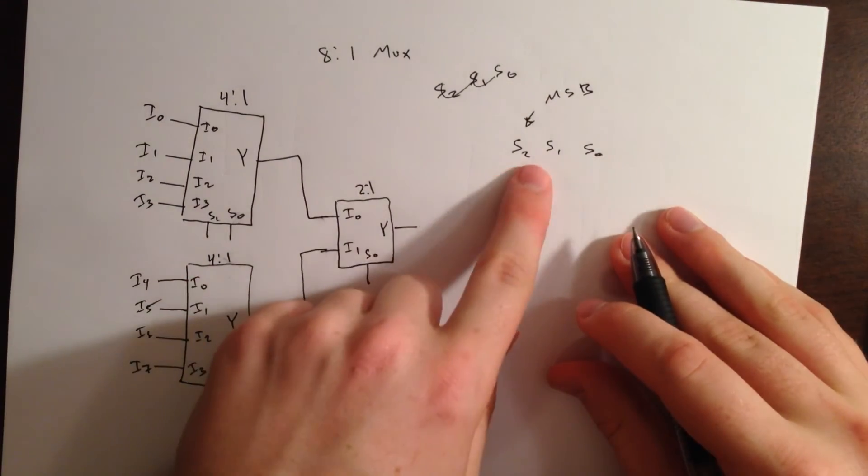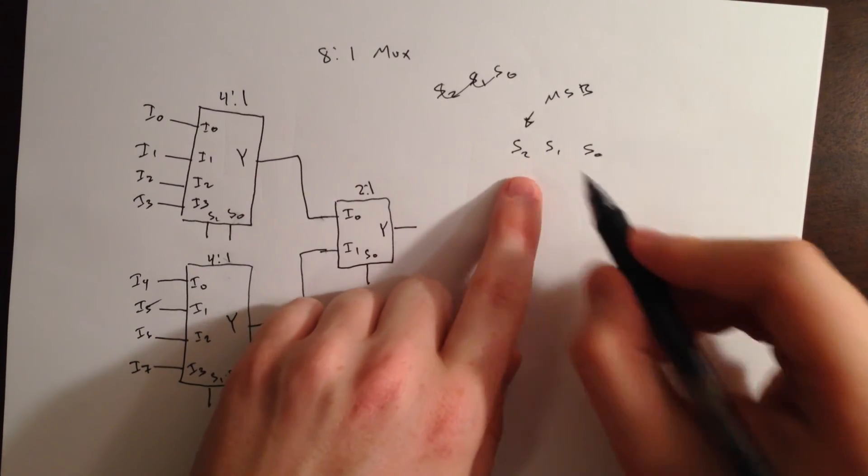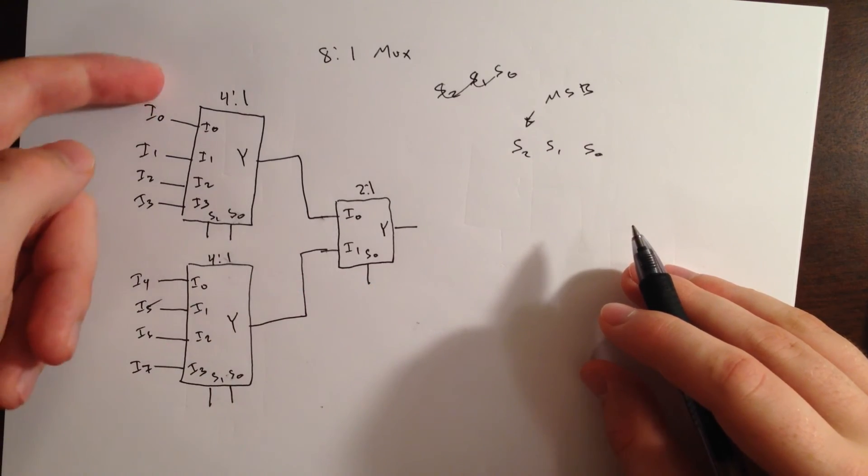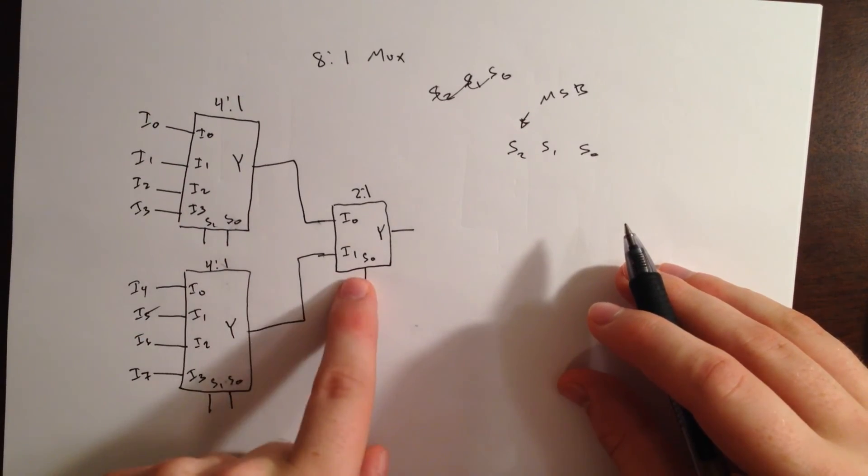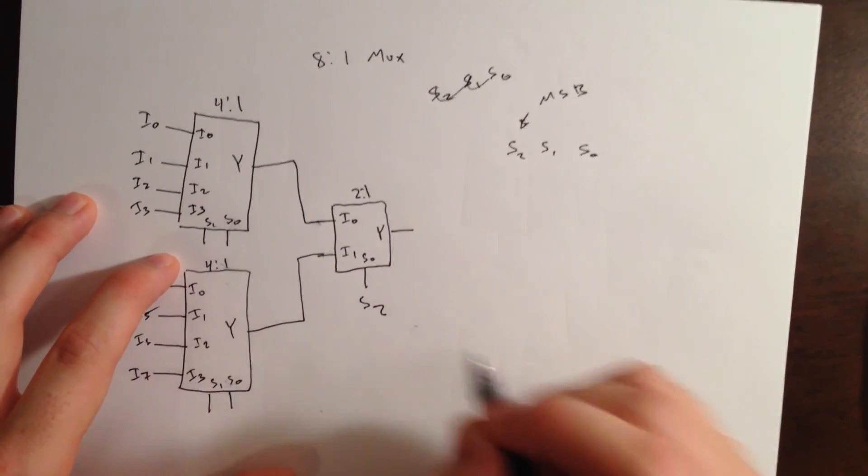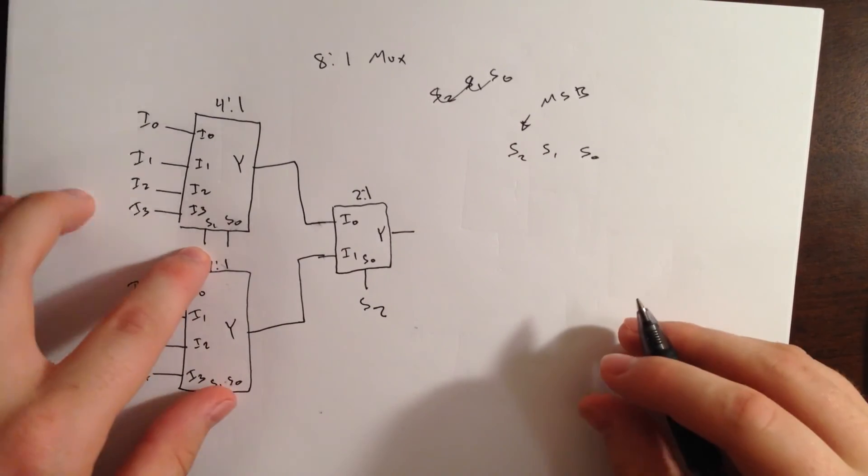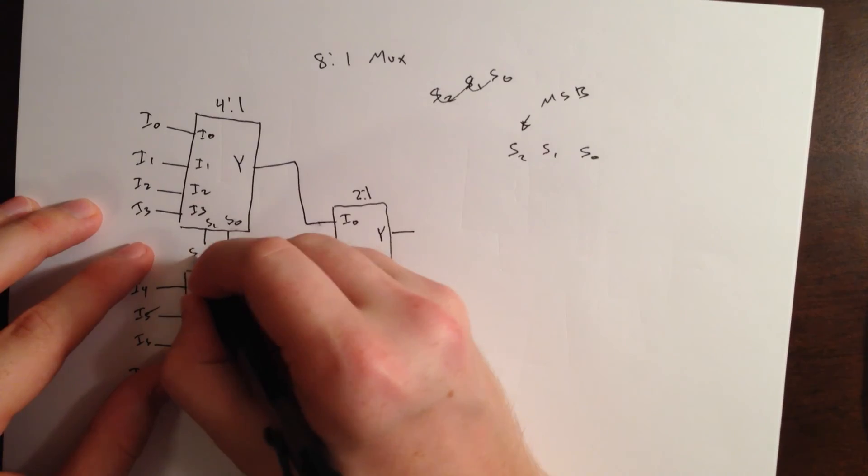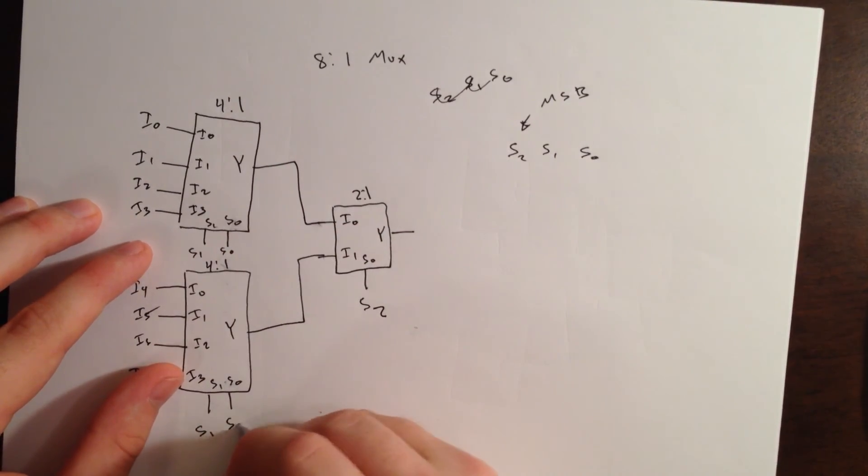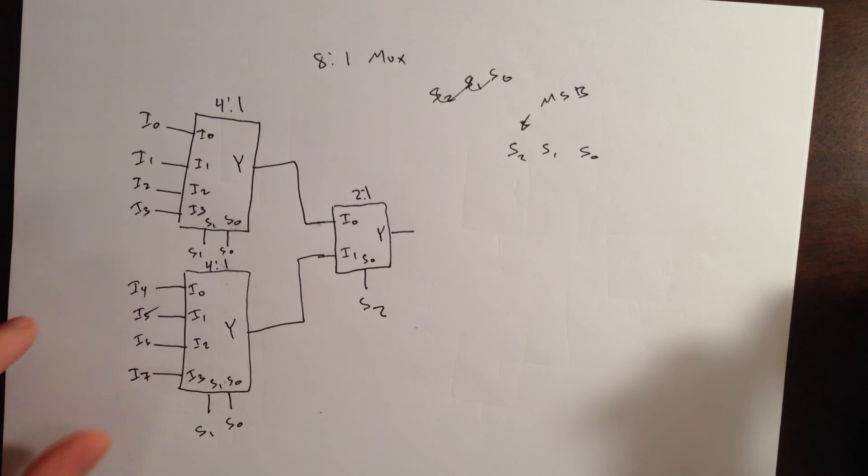It's going to change the value of this decimal equivalent more heavily than S1 or S0 could. And, this 2:1 multiplexor chooses between these four and these four, so this must be our most significant multiplexor. So, that will be S2. And, then, our S1 and S0 will just stay the same for the 4:1 multiplexors.